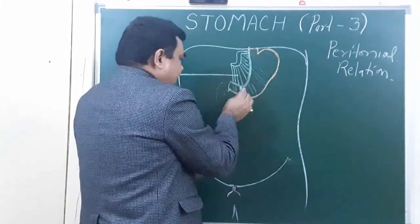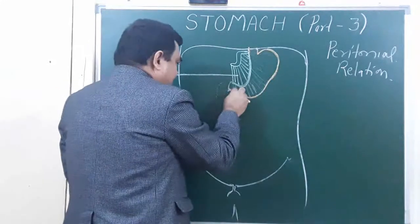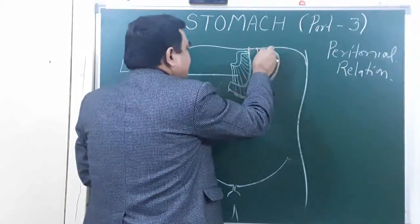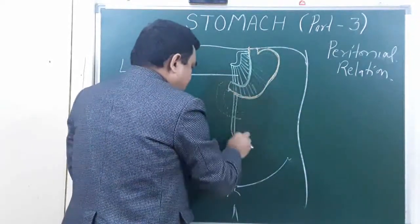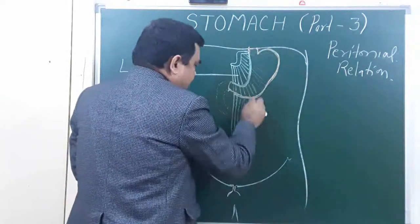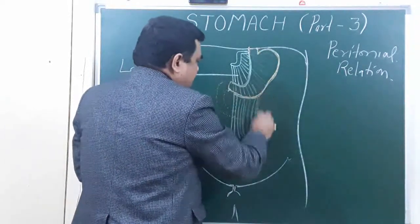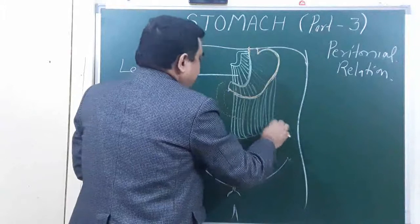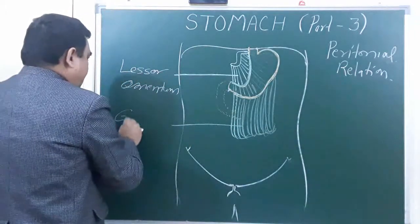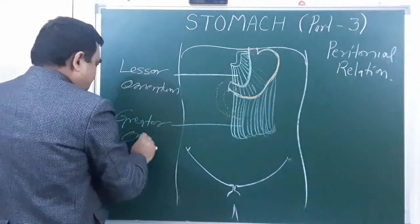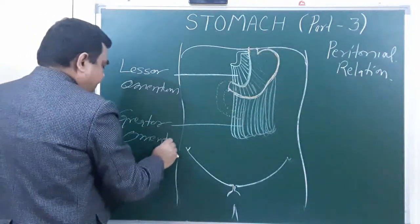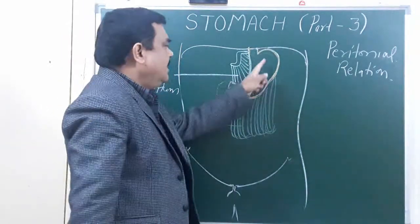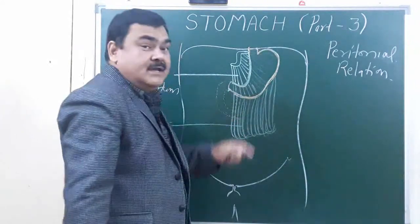After covering both surfaces, the lesser omentum attaches with the lesser curvature, while the greater omentum attaches along the greater curvature and hangs down from it.